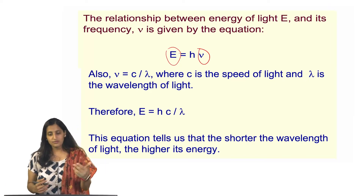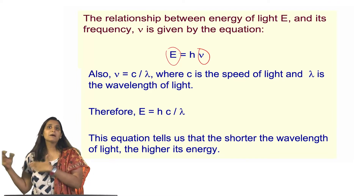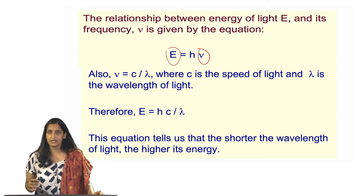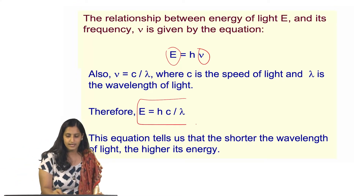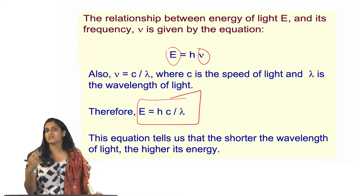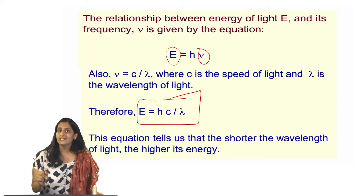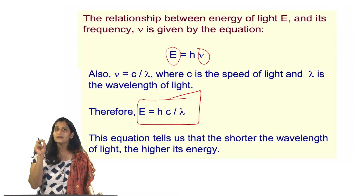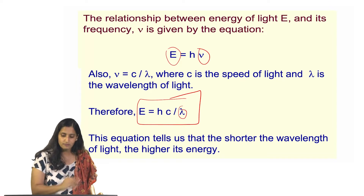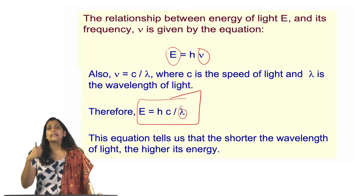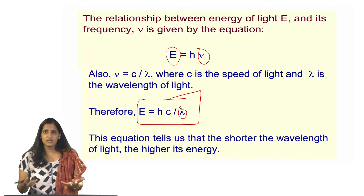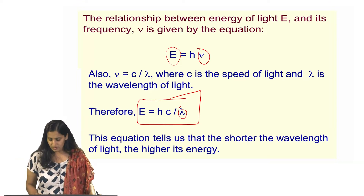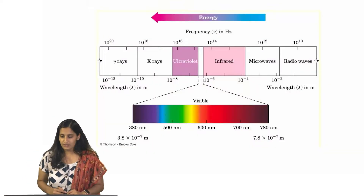We also know that ν (frequency) = c/λ, where c is the speed of light and λ is the wavelength of that light. So E is also equivalent to hc/λ. These two equations are very important: E = hν and E = hc/λ. What they tell us is that the shorter the wavelength, the higher the energy. So the smaller the wavelength, the higher is the energy, and that is what we see in the electromagnetic spectrum.